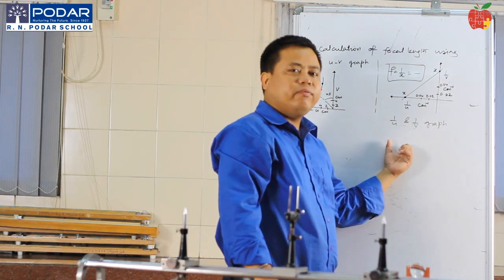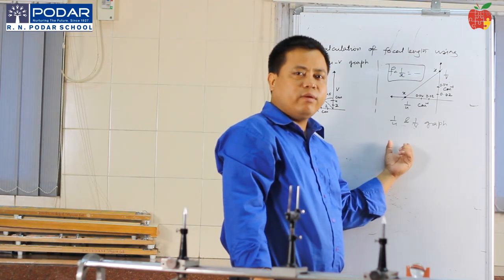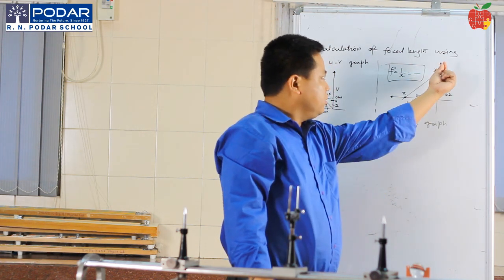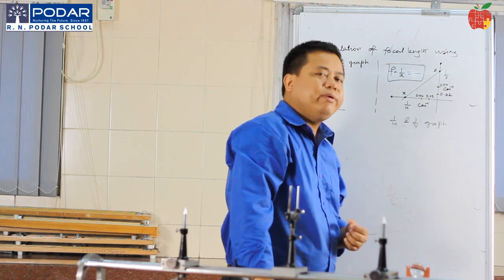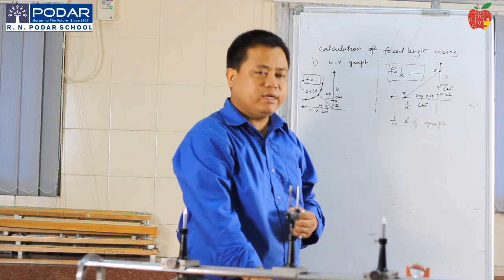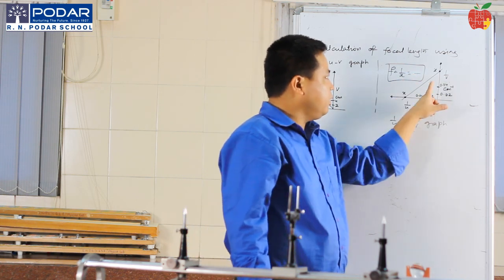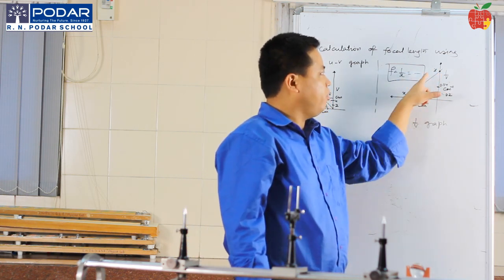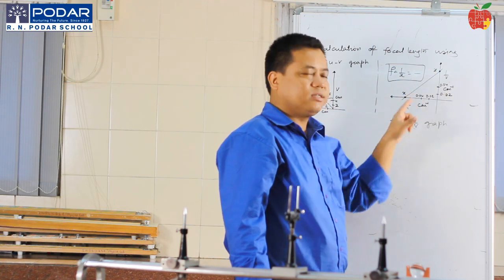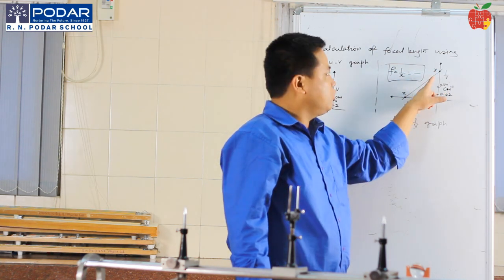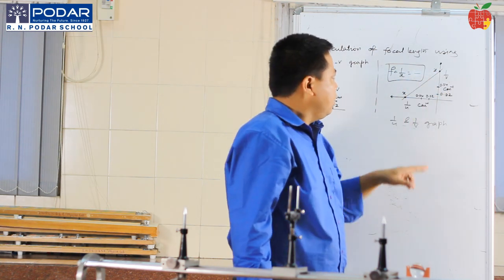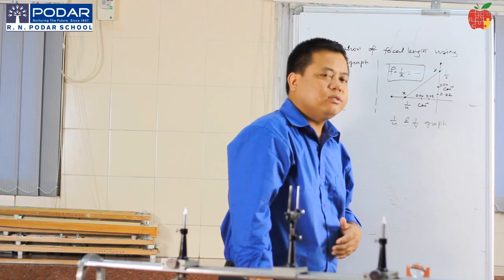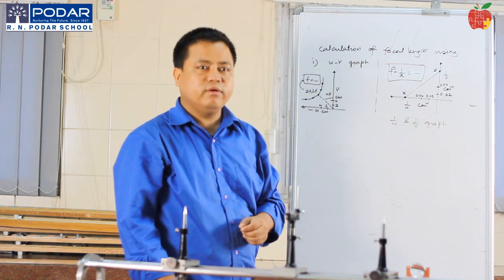Similarly, when we plot the graph of 1/u vs 1/v, the graph gives a straight line. The intercepts should be the same on both sides — call it x. Using f = 1/x, we can calculate the focal length of the lens.